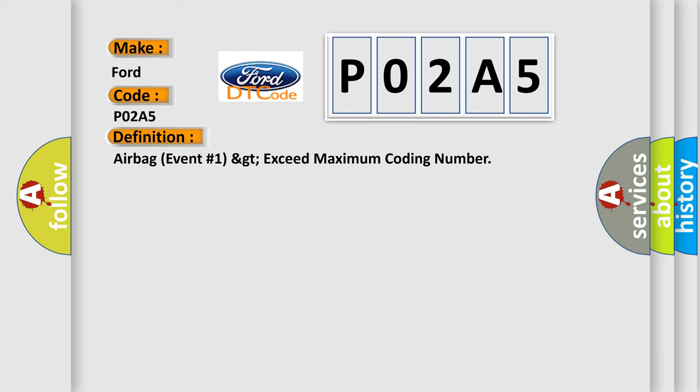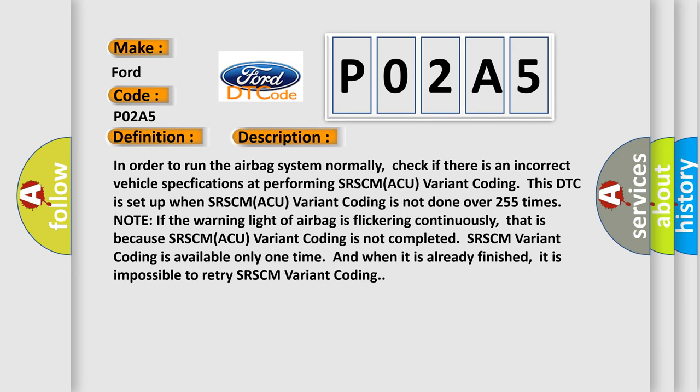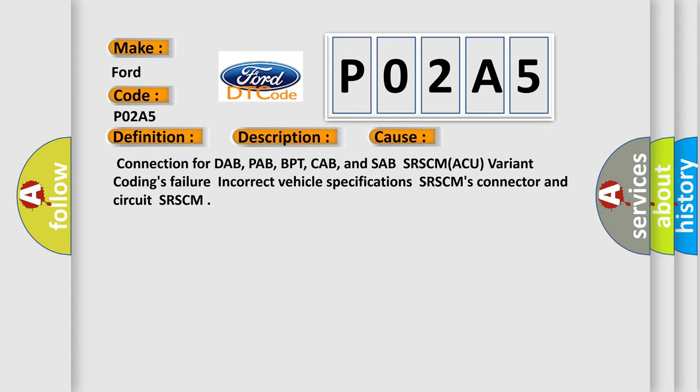Here is a short description of this DTC code. In order to run the airbag system normally, check if there is an incorrect vehicle specification when performing SRSC MACU variant coding. This DTC is set when SRSC MACU variant coding is not done over 255 times. Note: if the warning light of the airbag is flickering continuously, that is because SRSC MACU variant coding is not completed. This diagnostic error occurs most often when the airbag system coding has not been completed over 255 times. The airbag reset website aims to provide information in 52 languages.